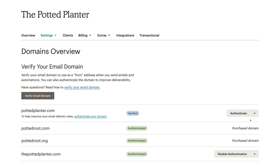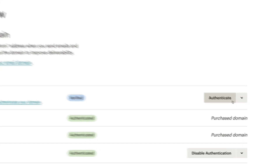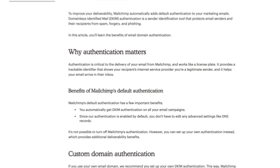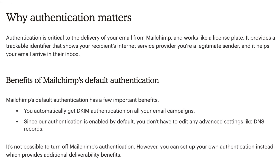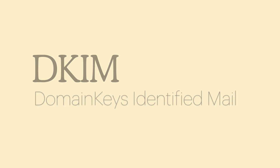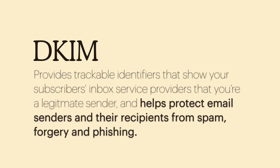In this video, you'll learn how to set up DKIM authentication for an email domain managed outside of MailChimp. Authentication is critical for the delivery of your emails to your recipients' inboxes. Using Domain Keys Identified Mail, or DKIM, shows your subscribers' inbox service providers that you're a legitimate sender and helps protect you and your recipients from spam, forgery, and phishing.